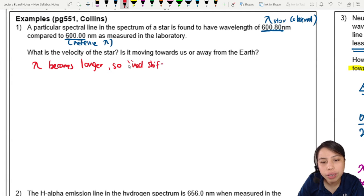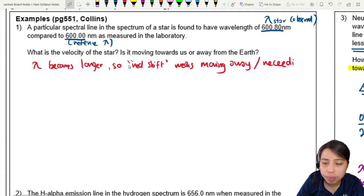Redshift means moving away from us, or also known as it is receding. Receding means to move away. This is what the word means.